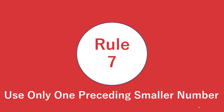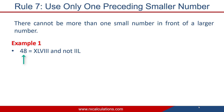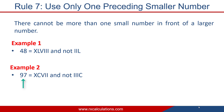Rule number 7: use only one preceding smaller number. There cannot be more than one smaller number in front of a larger number. For example, 48 = XLVIII. You cannot write it as IIL, because even though you may be trying to use the rule of subtraction, you have more than one small number in front of a larger number, which violates rule 7. Similarly, 97 = XCVII — you cannot write it as IIIC, because you have three I's in front of C.